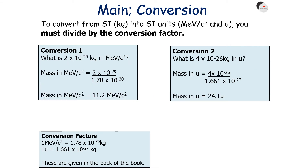To convert from SI into non-SI units, you must divide by the conversion factor. For example, what is 2×10⁻²⁷ kg in MeV/c²? You divide: 2×10⁻²⁷ ÷ 1.78×10⁻³⁰ = 11.2 MeV/c². Or, what is 4×10⁻²⁷ kg in u? You divide: 4×10⁻²⁷ ÷ 1.661×10⁻²⁷ = 24.1 u.